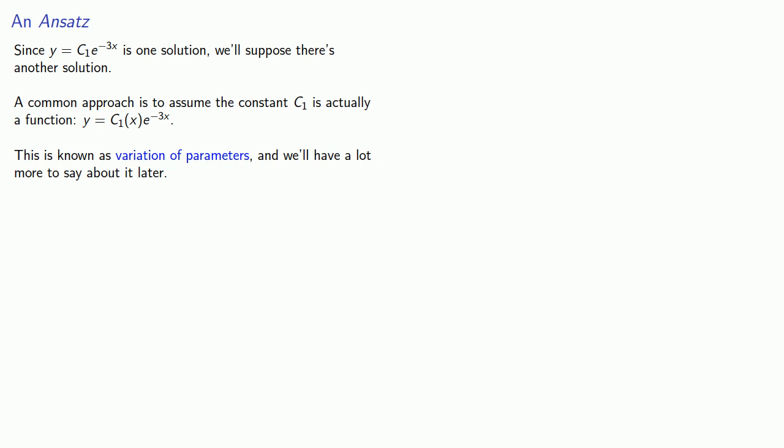This goes back to an important idea in mathematics and in life. It's easier to obtain forgiveness than permission. If it works, great. If it doesn't work, well, then you'll have some explaining to do. We'll have a lot more to say about variation of parameters later.